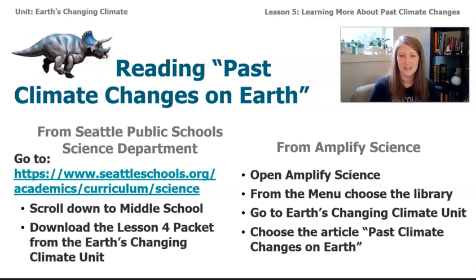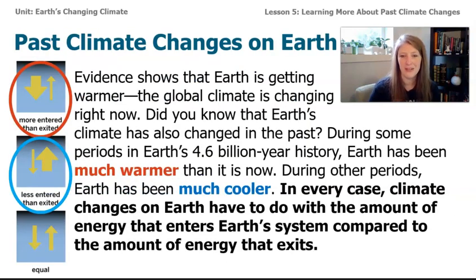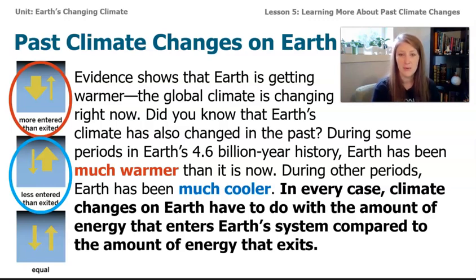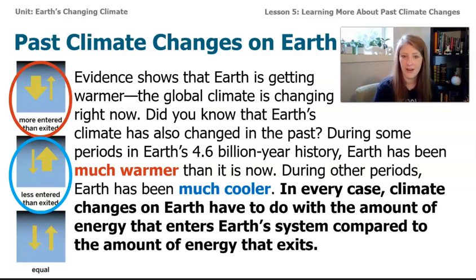Let's read the first couple paragraphs of this article together. The article starts: 'Evidence shows that Earth is getting warmer. The global climate is changing right now. Did you know that Earth's climate has also changed in the past? During some periods in Earth's 4.6 billion year history, Earth has been much warmer than it is now, and during other periods, much cooler. In every case, climate changes on Earth have to do with the amount of energy that enters Earth's system compared to the amount that exits.'